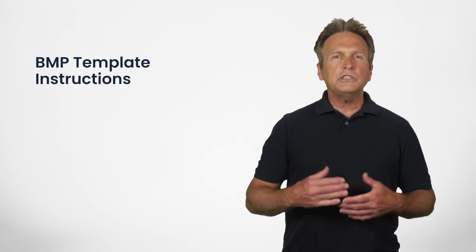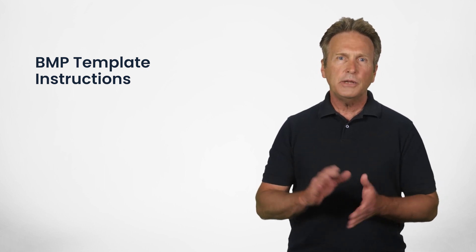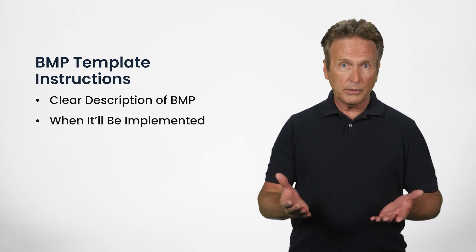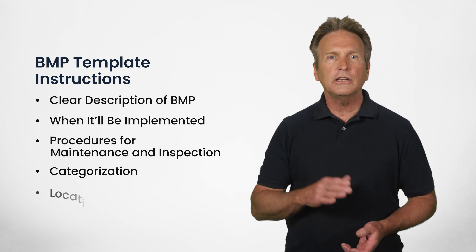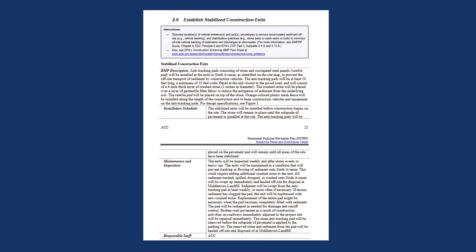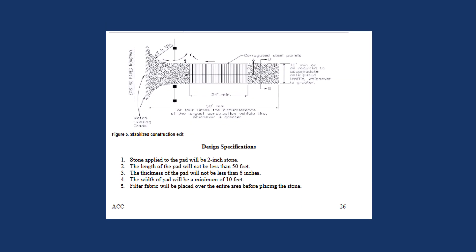When it comes to BMPs, these template instructions are equally detailed about what information is to be included — such as a clear description of what each BMP is, when it will be implemented, procedures for maintenance and inspection, its categorization, its location, and any design specifications. For example, in Section 2.9 on establishing stabilized construction exits, the planners offer detailed information on the BMP's description, installation schedule, maintenance and inspection, responsible staff, and visual design specifications.